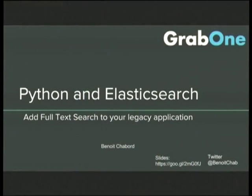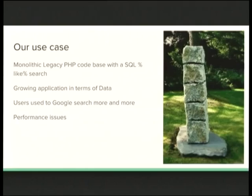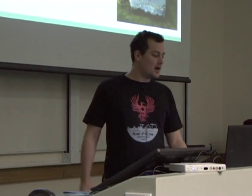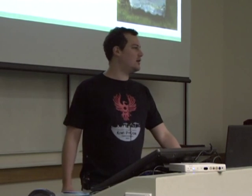About a year and a half ago at GrabOne, we started moving from our legacy PHP codebase. Search was using LIKE percent queries, and we had more and more data in our database. Users are increasingly used to searching like Google — you type something, there's spelling correction, it just gives you what you need. We also started having performance issues as the site grew and we had more and more deals.